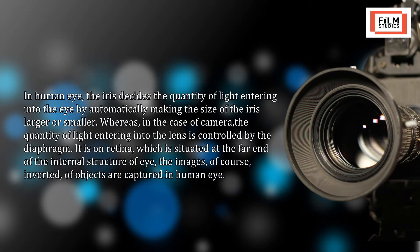Light enters the biological eye through the pupil; in a camera, light enters through the aperture — a hole or opening. Therefore, the pupil and aperture are functionally similar. In the human eye, the iris controls the quantity of light by automatically making itself larger or smaller, whereas in the camera this is controlled by the diaphragm. Images of objects — inverted — are captured on the retina at the far end of the eye's internal structure.